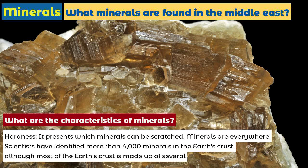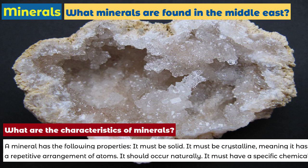Minerals are everywhere. Scientists have identified more than 4,000 minerals in the Earth's crust, although most of the Earth's crust is made up of only a few. A mineral has the following properties: it must be solid, it must be crystalline — meaning it has a repetitive arrangement of atoms — it should occur naturally, and it must have a specific chemical composition.